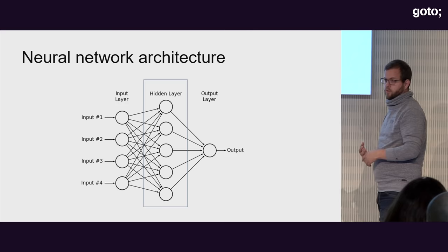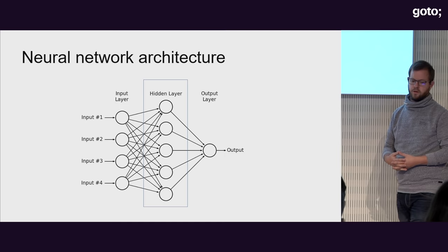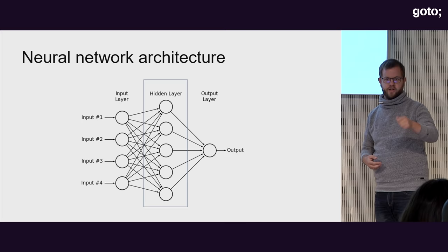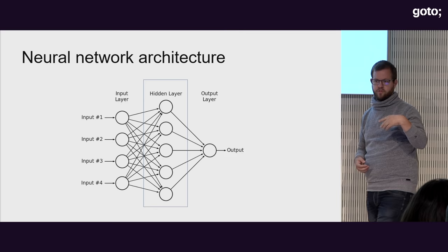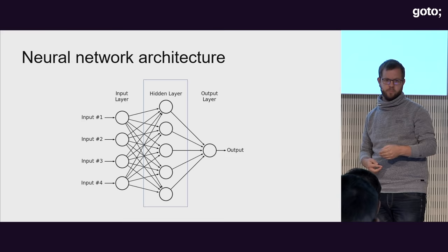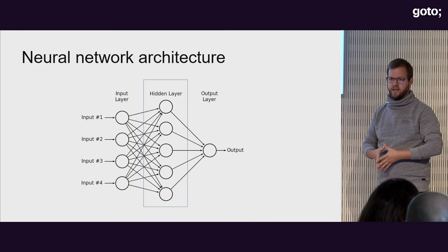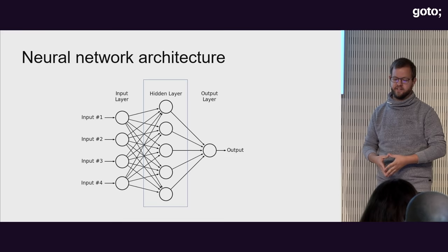In between the input layer and output layer there are one or more hidden layers, and this is where the power of a neural network lives. When I have a single layer neural network, it's basically an old-fashioned machine learning algorithm — it does one transformation. When I have several layers, I start to get the capability of learning things we would normally not be able to. If you ever see a neural network without a hidden layer, it has to have at least one hidden layer.